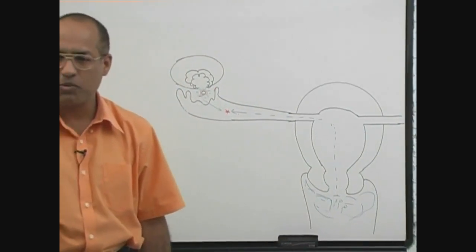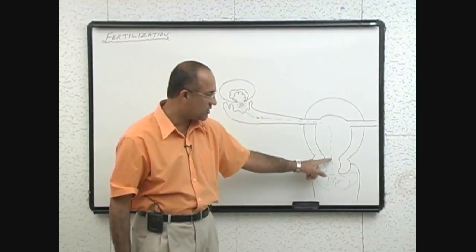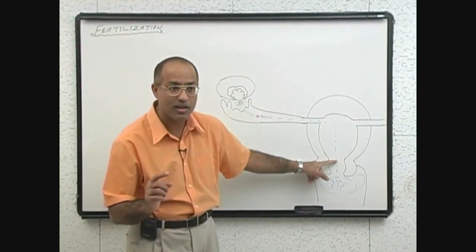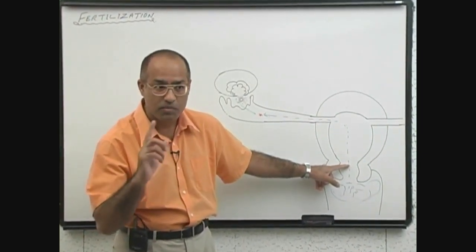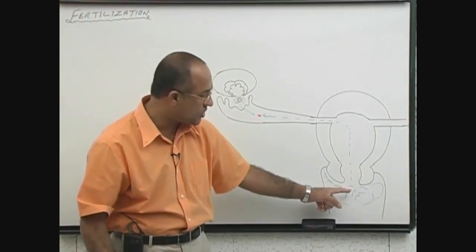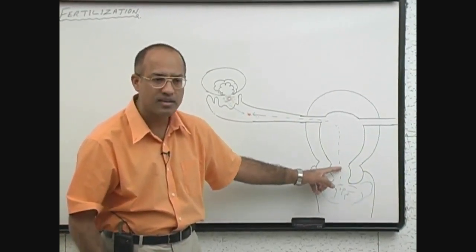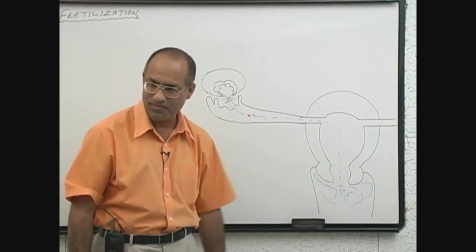What propels the sperm through this? The tail of the sperm. Tail of the sperm moves and these are the propulsion by the tail of the sperm which help the sperms to travel from the vagina through the cervical canal into the uterine cavity.